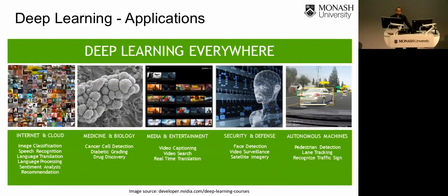Deep learning is everywhere. You may or may not be aware of the technology, but you are actually using deep learning in one form or another. It is present on the internet and in clouds. Applications include image classification, speech recognition, language translation, and sentiment analysis. One good example of image classification is Facebook — if you upload a photo, it can identify your face and automatically tag the images, and the underlying technology for that classification is deep learning.